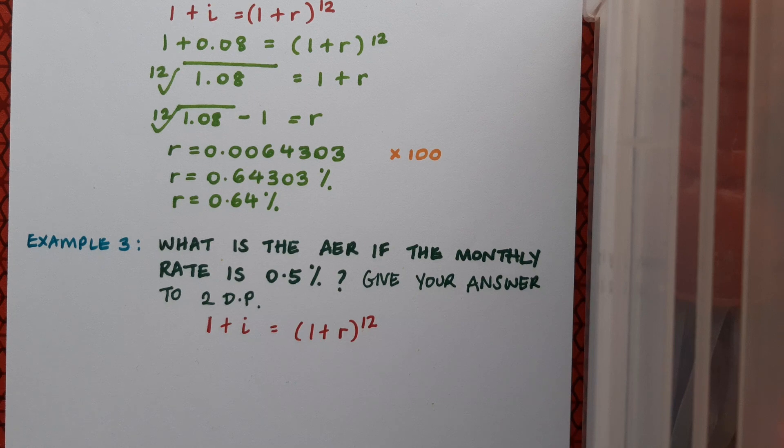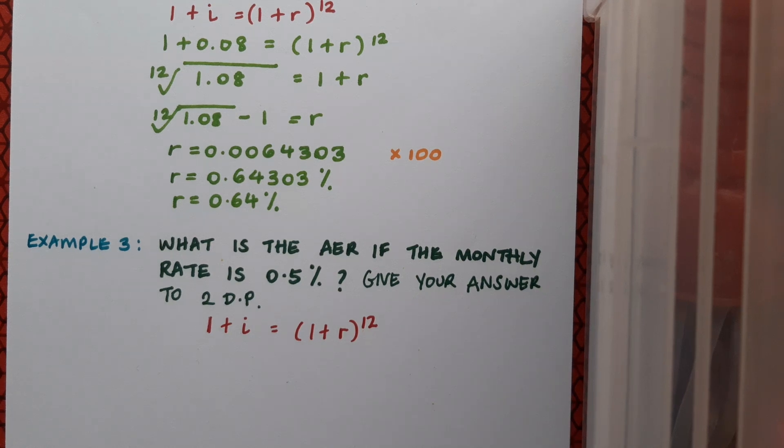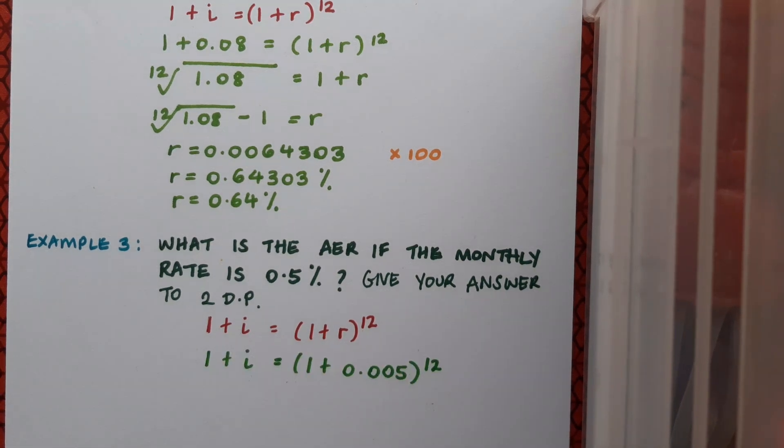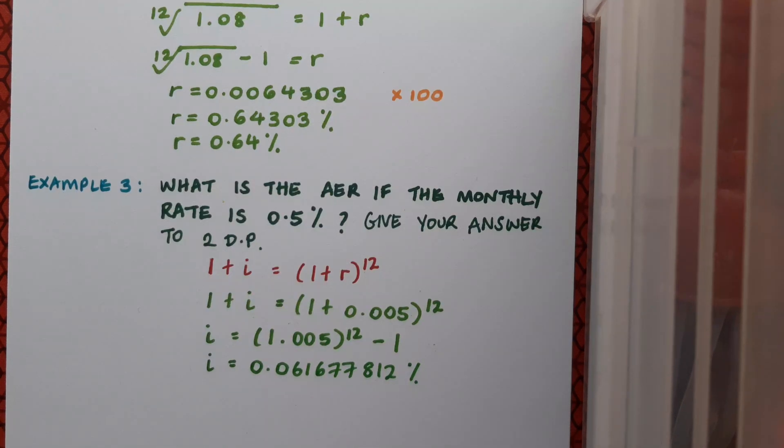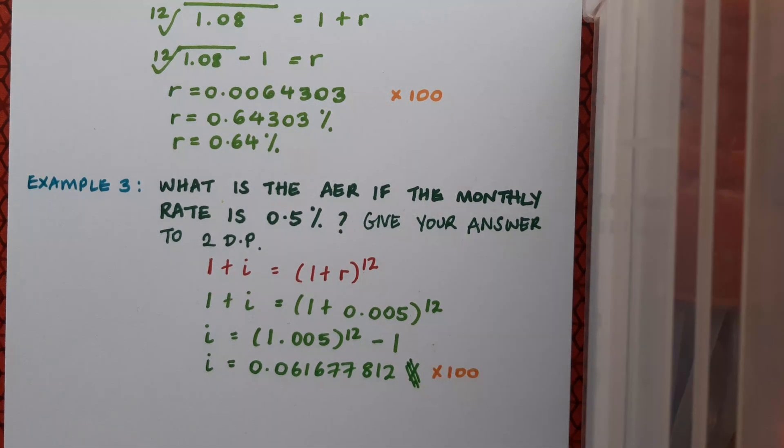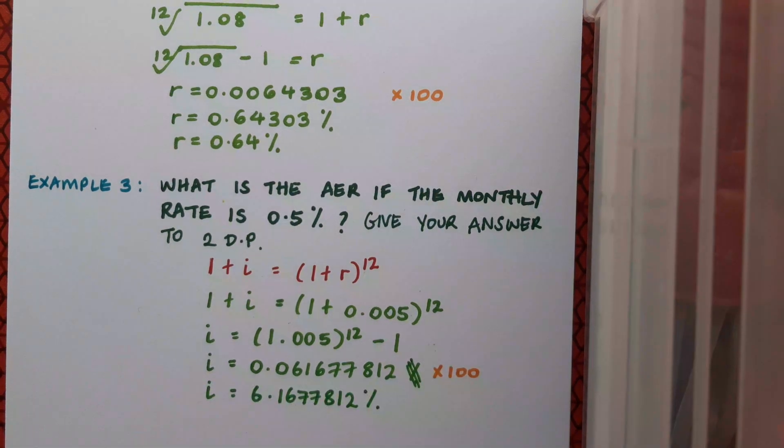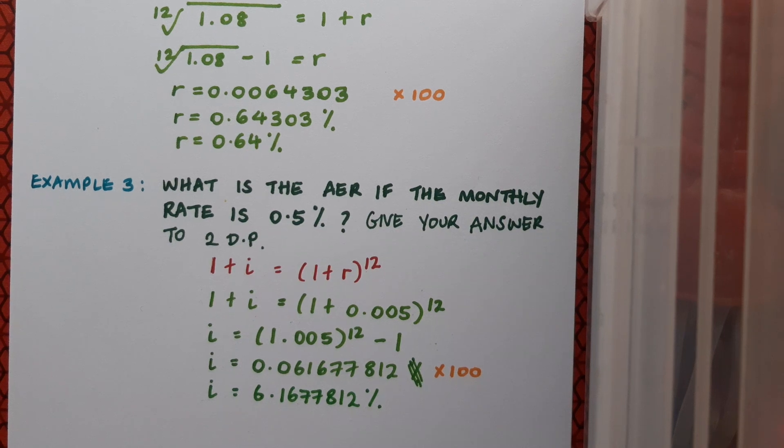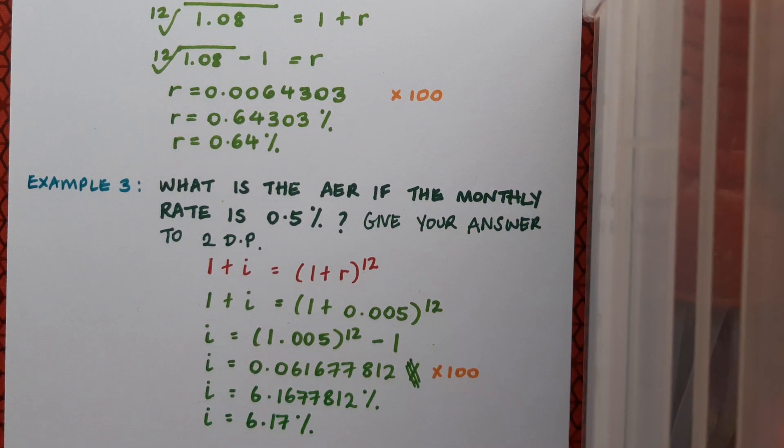So I'm just starting by making a note of the formula. This time I know r not i. I mustn't forget to change that 0.5% into decimal when I'm filling it in and if I want to just do it in one calculation I can type into my calculator 1.005 to the power of 12 minus 1. This gives me an interest rate of 0.061677812. Times by 100 giving me 6.1677812% and then finally rounding off I've got 6.17%.